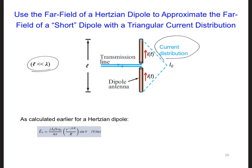Use our solution that we obtained earlier for a Hertzian dipole, which is given right here, and spend a minute thinking about how you would calculate the far fields from this short antenna with a triangular current distribution.